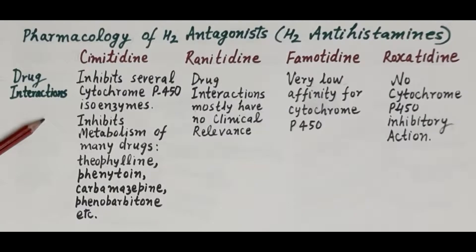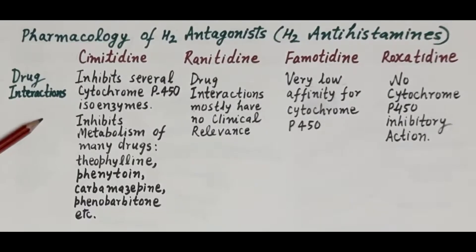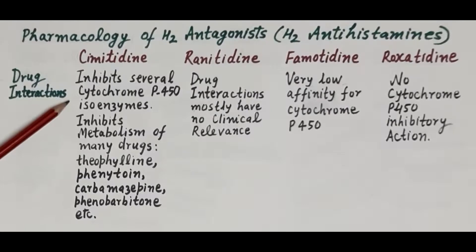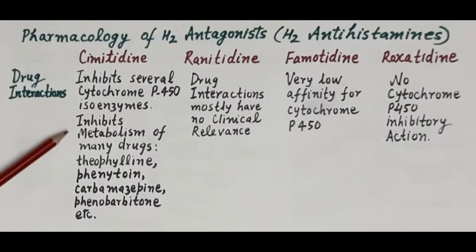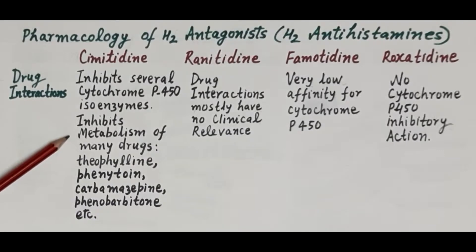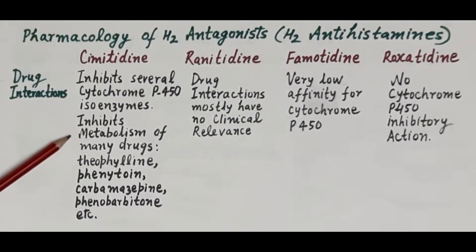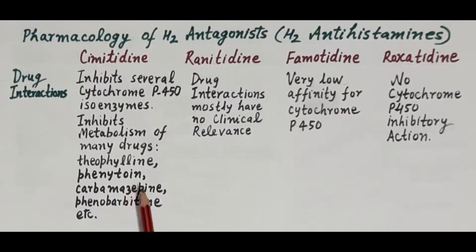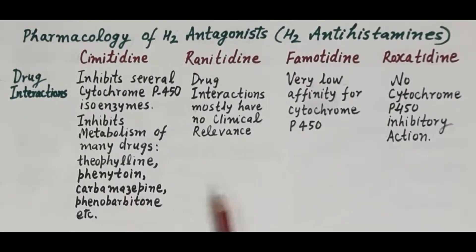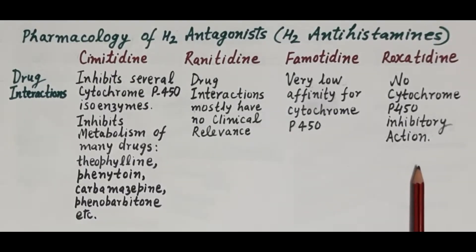Regarding drug interactions, cimetidine inhibits several cytochrome P450 isoenzymes and thus inhibits the metabolism of many drugs, causing their accumulation to toxic levels — for example, theophylline, phenytoin, carbamazepine, and phenobarbitone. Other H2 antagonists — ranitidine, famotidine, and roxatidine — exhibit either very low or no affinity for cytochrome P450 isoenzymes.